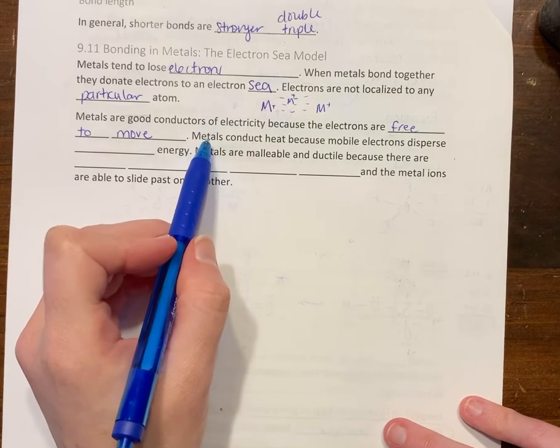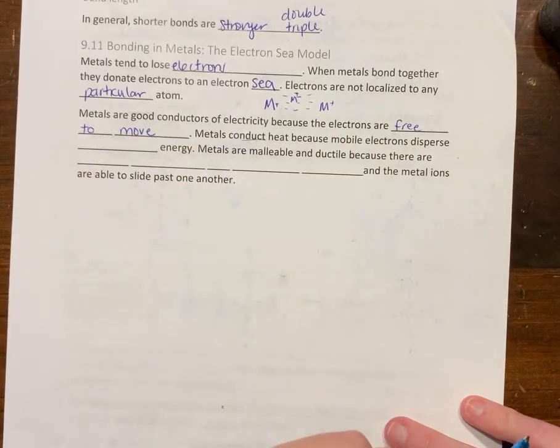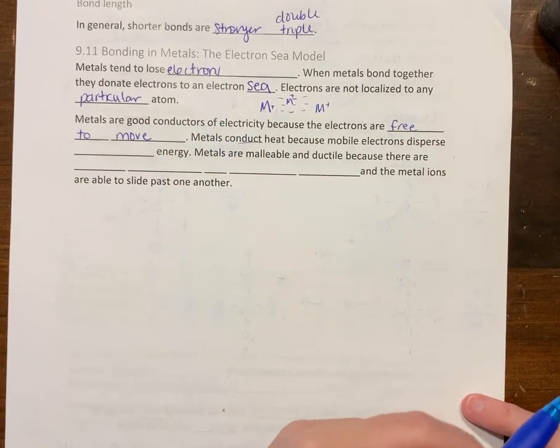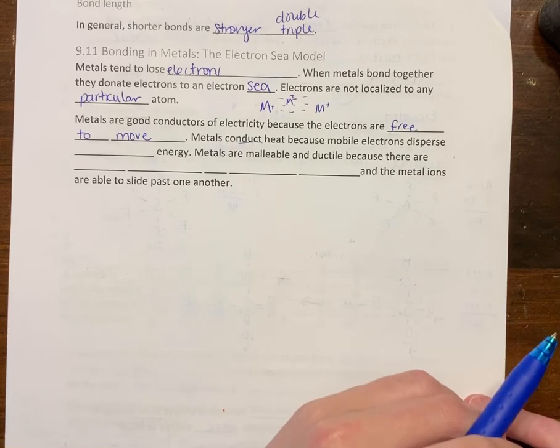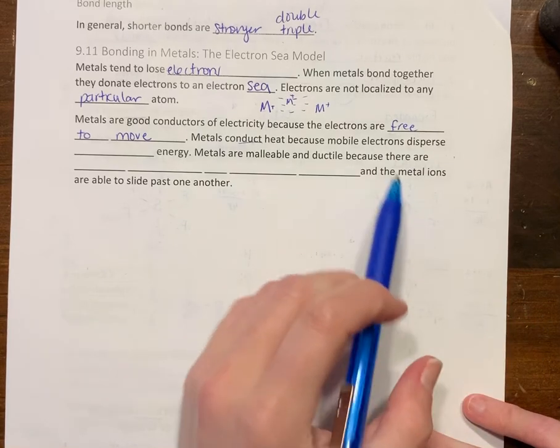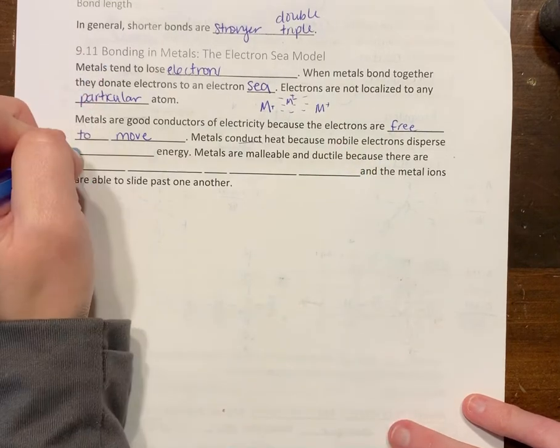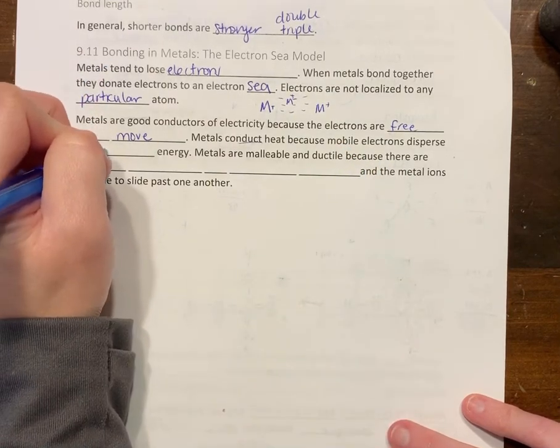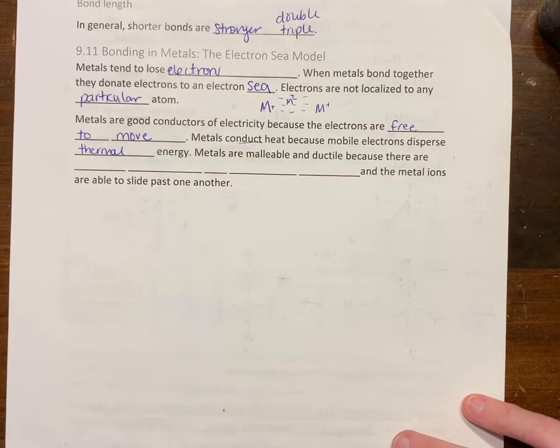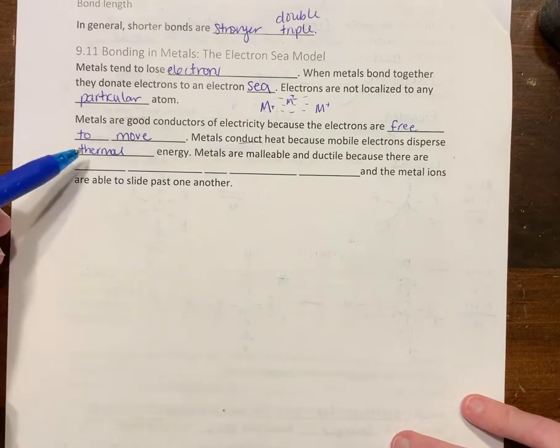Metals also conduct heat. They're good conductors of heat and electricity. These are good properties of metals because these mobile electrons are really good at dispersing thermal energy. They move freely and disperse thermal energy—that would be heat.